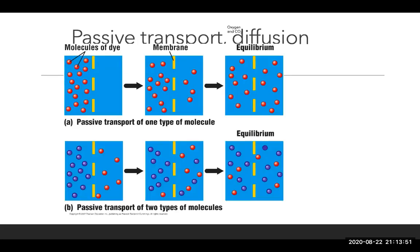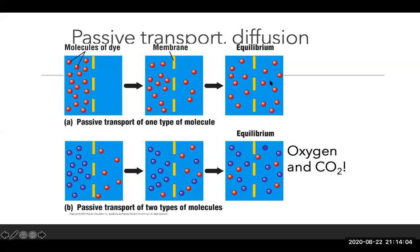Passive transport diffusion — simple diffusion — shows how molecules of a dye pass through a membrane until equilibrium is reached on both sides of the membrane. In the passive transport of two types of molecules, there are two different types, but they will both travel through the membrane until the concentration of each is equal on both sides. We call that equilibrium.